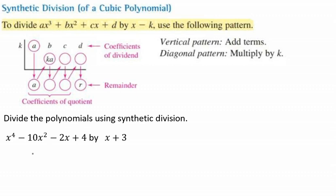So notice here that we're missing an x³ term. So we need to make that 0x³. So what we're really looking at here is x⁴ + 0x³ - 10x² - 2x + 4. Because you can't have any of your degree spots vacant. It's got to have something in there, or it's just not going to work.